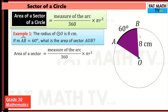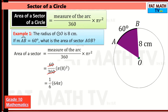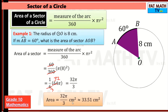The measure of the arc is 60, so 60 divided by 360 times pi r squared, using r equals 8. Simplify: divide 60 and 360 each by 60 to get 1 over 6. Then 8 squared is 64, giving us one-sixth of 64pi. Simplify further by dividing by 2 to get 32, and then this becomes 3.